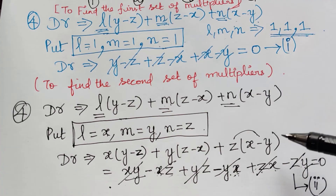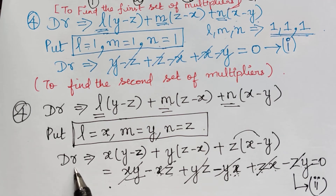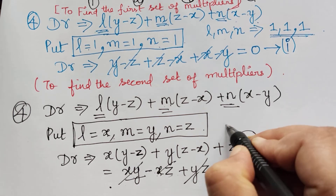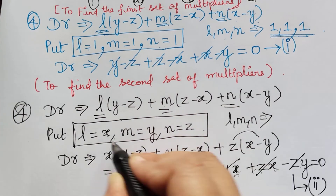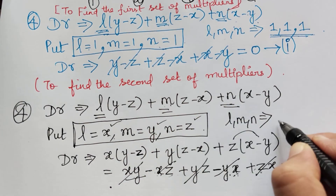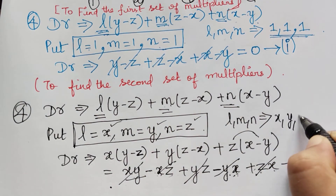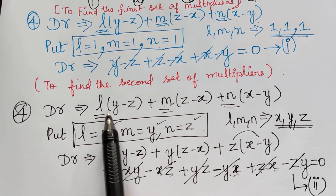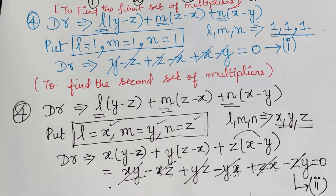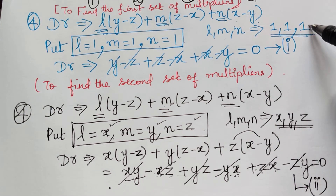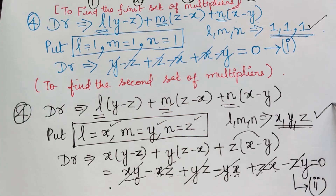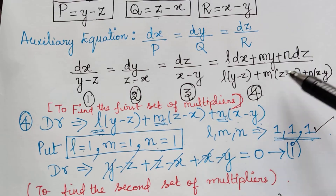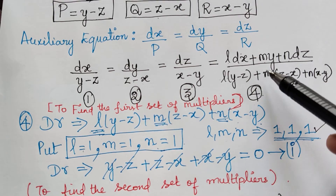We have found the second set of multipliers. After finding both sets of multipliers, we will substitute each one separately in equation 4 to find the final solution. Let us do that now.